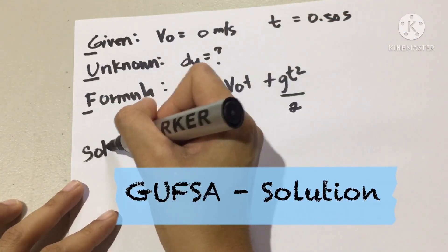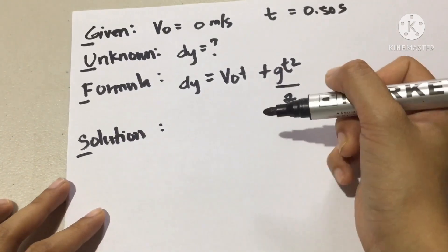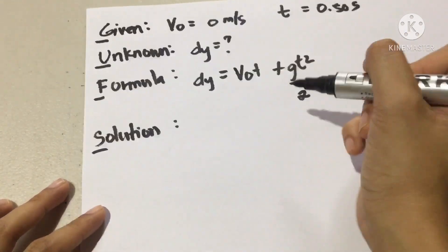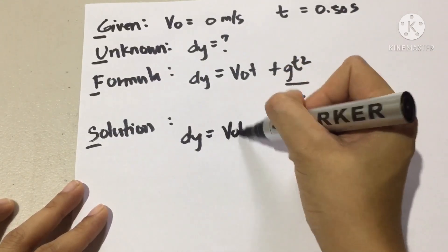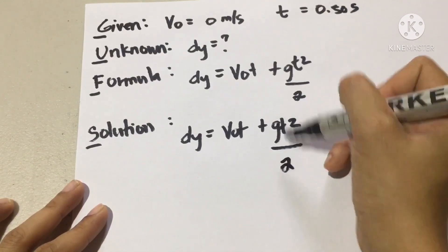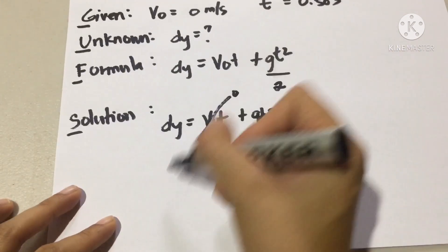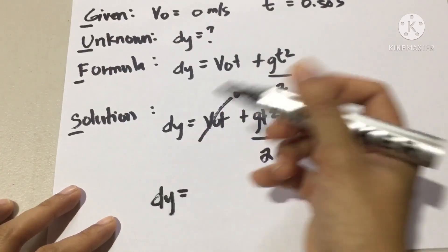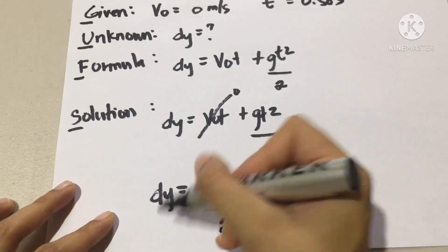Next, our solution. Again, in our solution, we don't need to derive the formula. The formula is ready to solve our unknown. Since our V₀ is equal to 0, automatically, it is 0. So, ∆Y is equal to GT squared divided by 2.